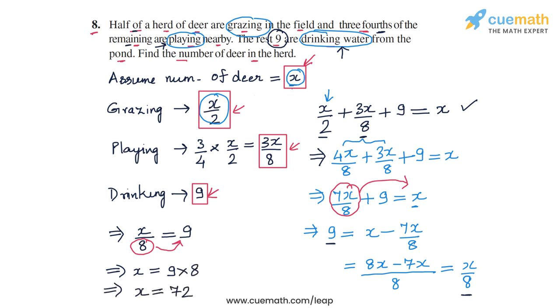So the total number of deer in the herd is 72. Let's verify whether this is correct. If half of the deer are grazing, then the number of grazing deer should be 36.